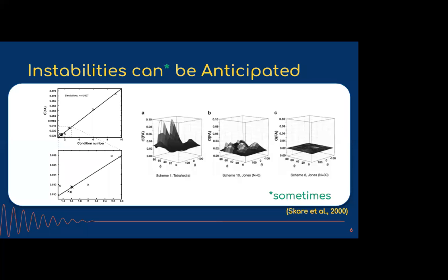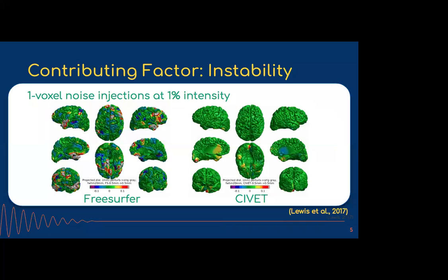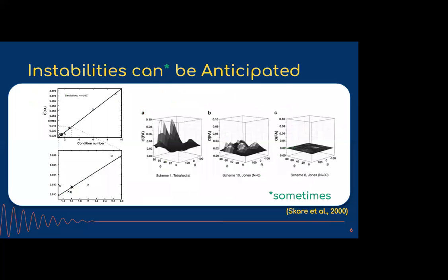Sometimes these instabilities can actually be anticipated. To answer the question about determinism: random seeds were fixed and these were made to be deterministic pipelines for this evaluation. So two runs without any noise give the same answer, but the second run where you add a tiny perturbation does give a different answer.